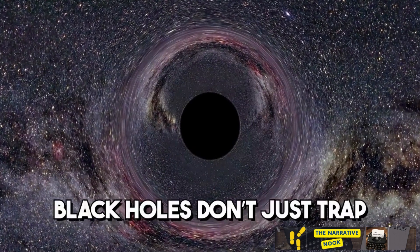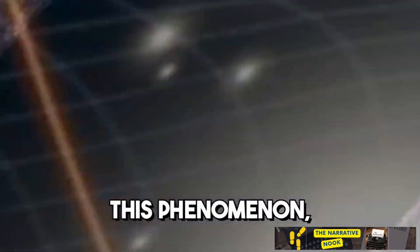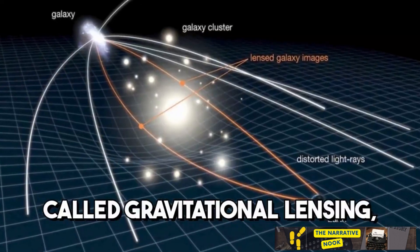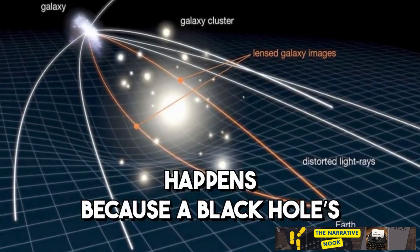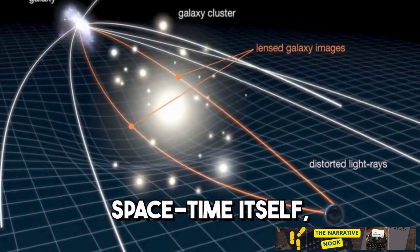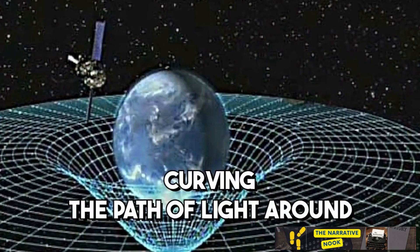Black holes don't just trap light, they bend it. This phenomenon, called gravitational lensing, happens because a black hole's immense gravity warps space-time itself, curving the path of light around it.